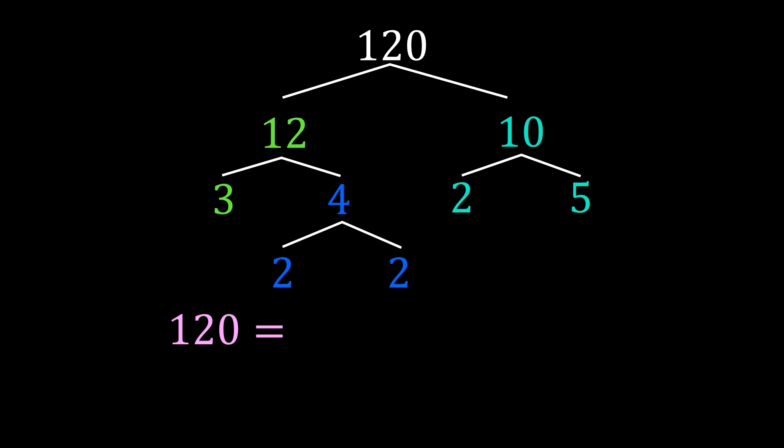So the prime factorization of 120 is 2 times 2 times 2 times 3 times 5. If I wanted to check my work, I could multiply my prime factors together. 2 times 2 is 4, times 2 more is 8, times 3 is 24, times 5 is 120. The other way I can write my prime factorization is 2 cubed, because I have three 2's, times 3 times 5.